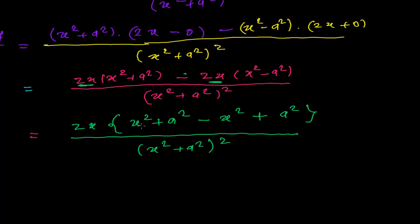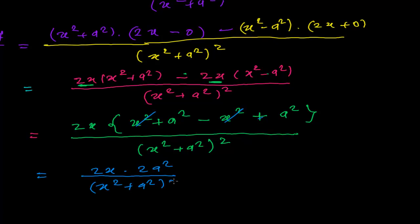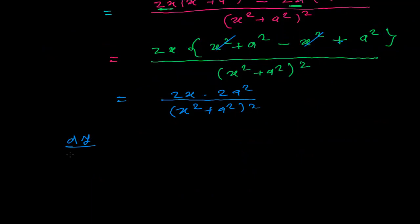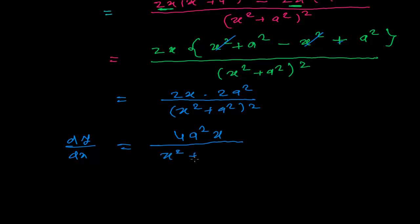Now x squared and minus x squared cancel out. We are left with a squared plus a squared, which is 2a squared. So we have 2x times 2a squared in the numerator, giving us 4a squared x, all divided by (x squared plus a squared) squared. So dy over dx equals 4a²x divided by (x² + a²)².